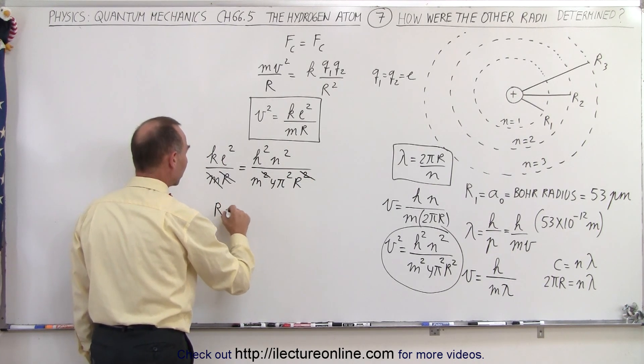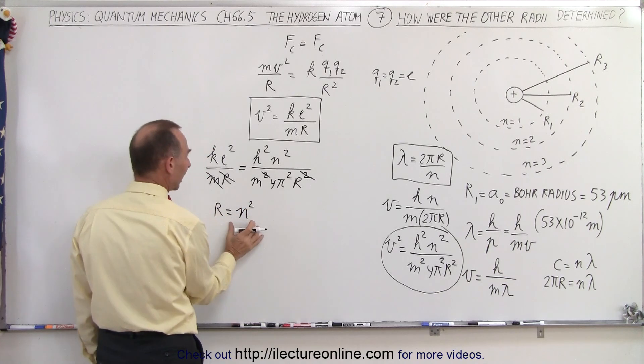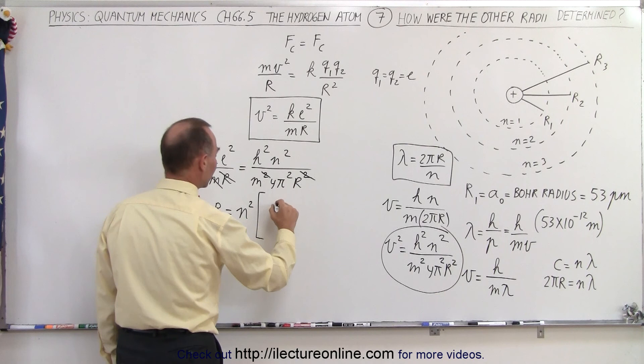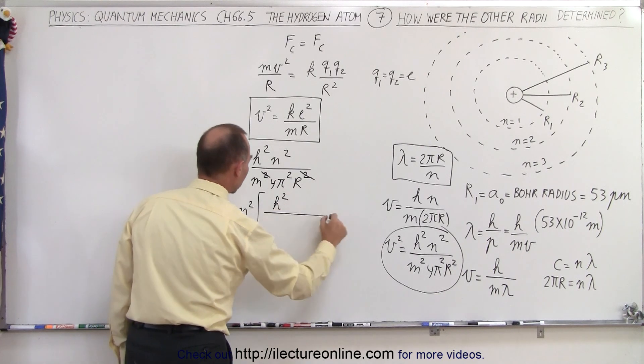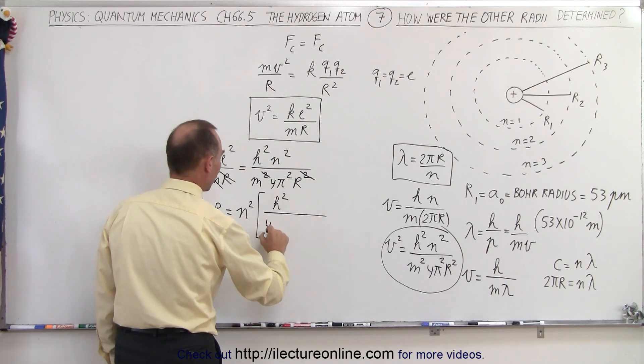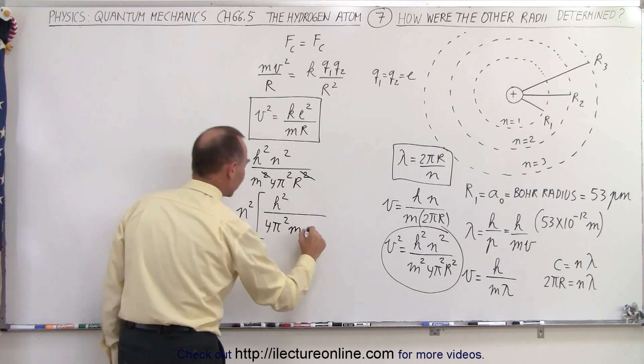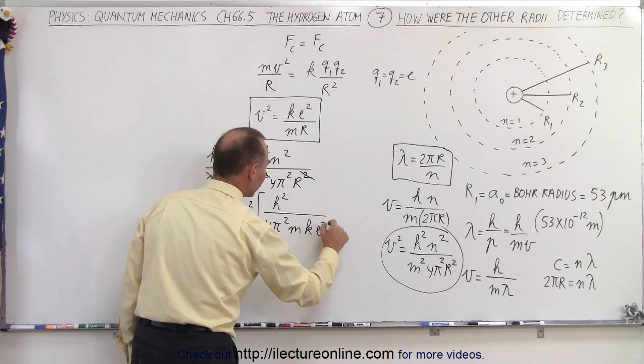So we have r is equal to n squared, so we'll isolate the n squared times, so what we have left here is we have an H squared in the numerator, divided by 4π squared times m times k times e squared.